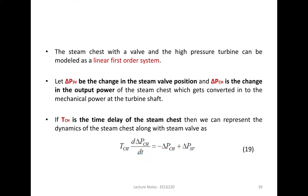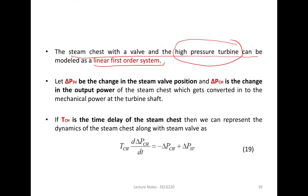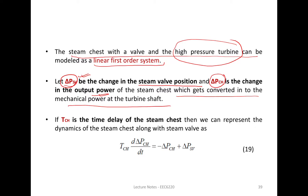The steam chest with a valve and the high pressure turbine can be modeled as a linear first-order system, since we are giving steam in and getting power output with no hindrance between them. Here, delta PSV is the change in steam valve position, and delta PCH is the change in output power — that is, the change in steam chest power which gets converted into mechanical power of the turbine.